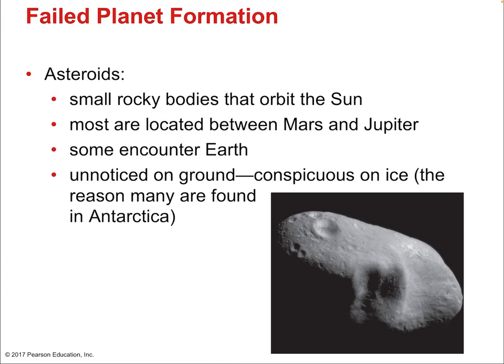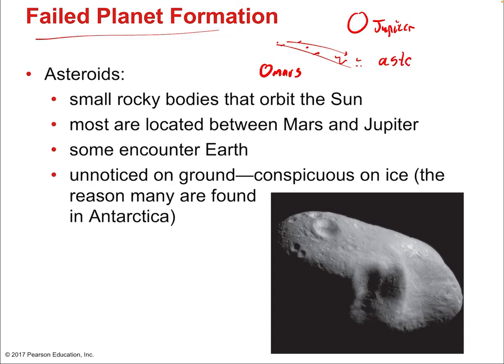The leftovers from the nebula that became the planets are themselves leftovers — and the leftovers from those leftovers are asteroids and comets. Asteroids are small, rocky bodies that orbit the sun. Most are located between Mars and Jupiter in the asteroid belt, where they exist due to gravitational tugging from Jupiter that prevents a planet from forming there. Some asteroids encounter Earth, pulled in on unique orbits due to gravitational interactions between planets.